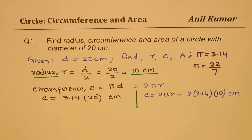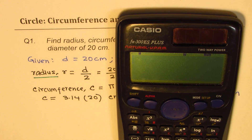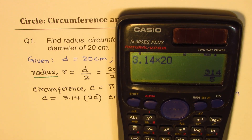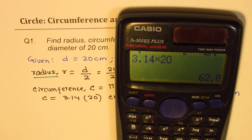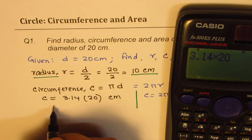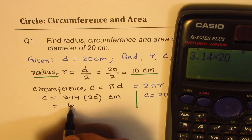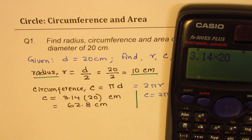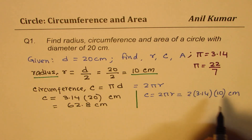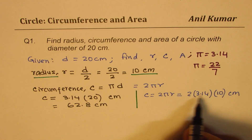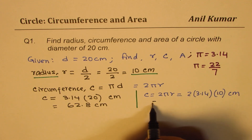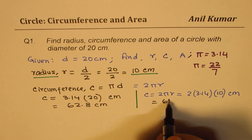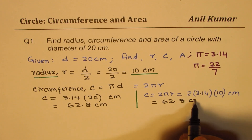Let's use the calculator. We get 3.14 times 20, which equals 62.8. And using 2πr: 2 times 10 is 20, giving the same answer of 62.8 centimeters.